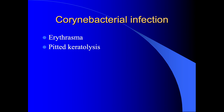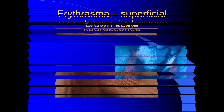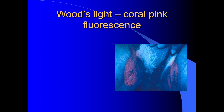Corynebacteria can produce two different skin infections — erythrasma and pitted keratolysis. Erythrasma tends to affect flexural areas such as the axilla and groins, and may also affect the web spaces of the toes. Here you can see erythrasma in the groin in natural light, producing a superficial brown, slightly scaly eruption. Under Wood's light — a small handheld fluorescent light — the areas of erythrasma fluoresce a beautiful coral pink colour. This is because corynebacteria metabolise agents in the skin to produce porphyrins, and it's these porphyrins which are fluorescing. Wood's light is a quick way of identifying erythrasma.